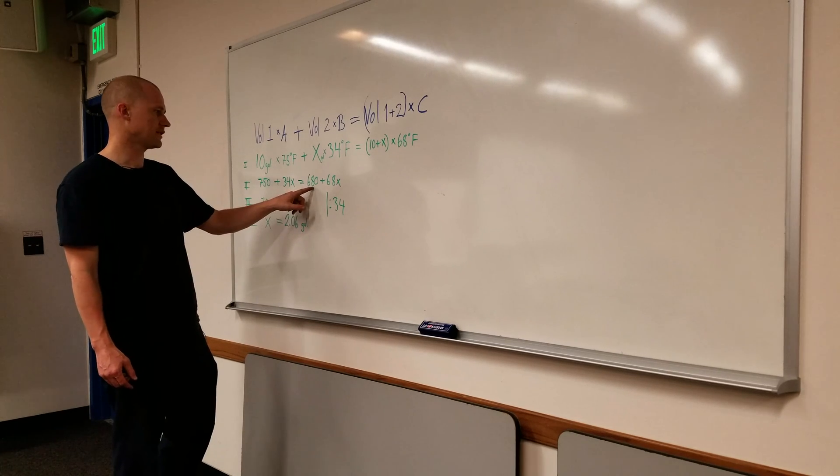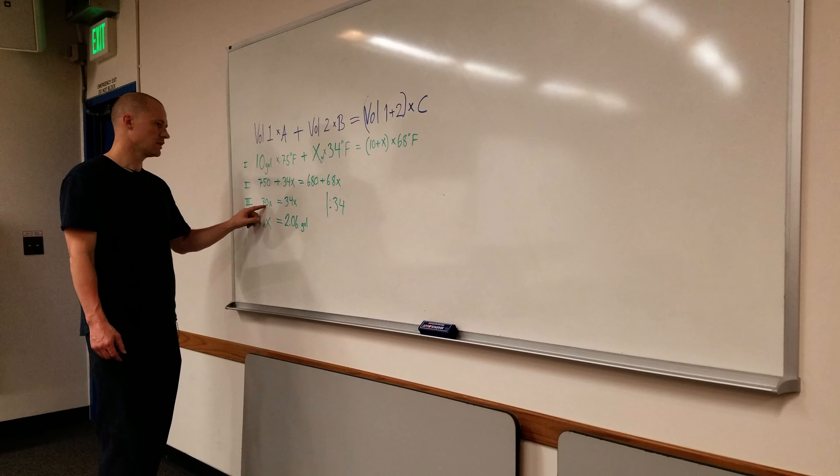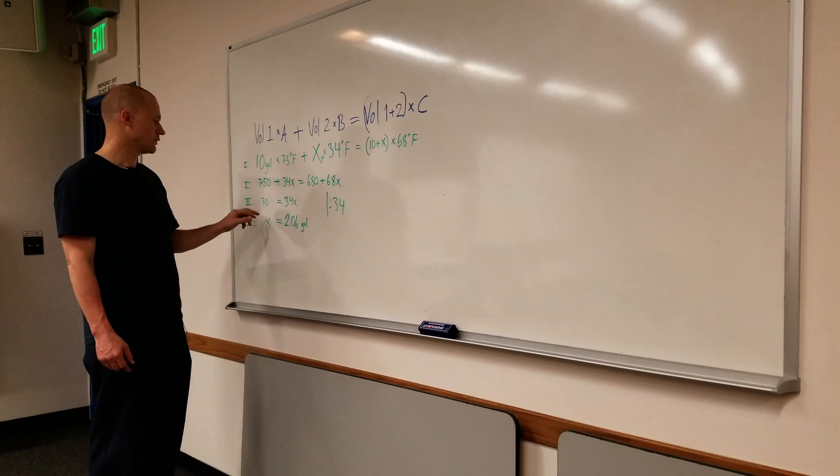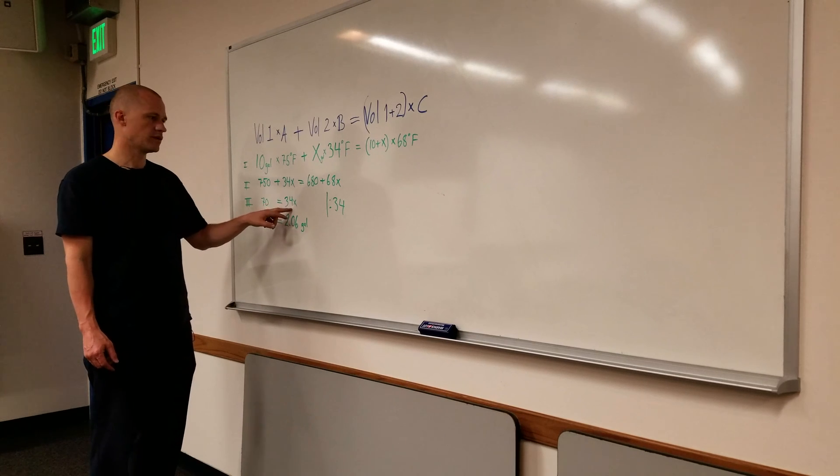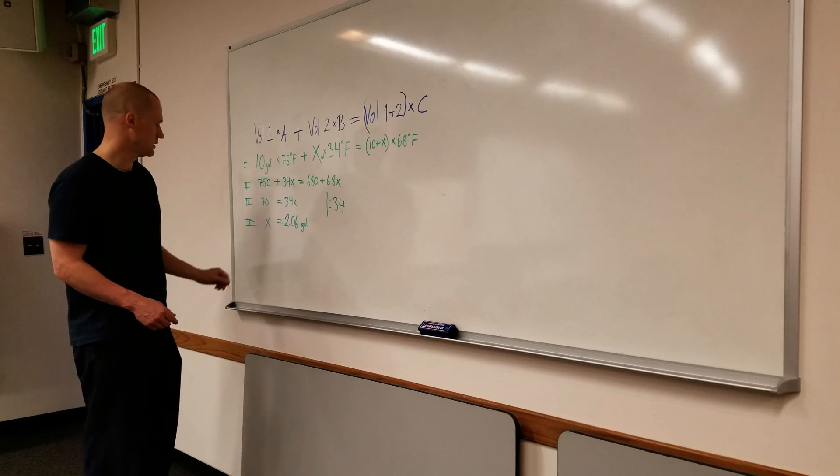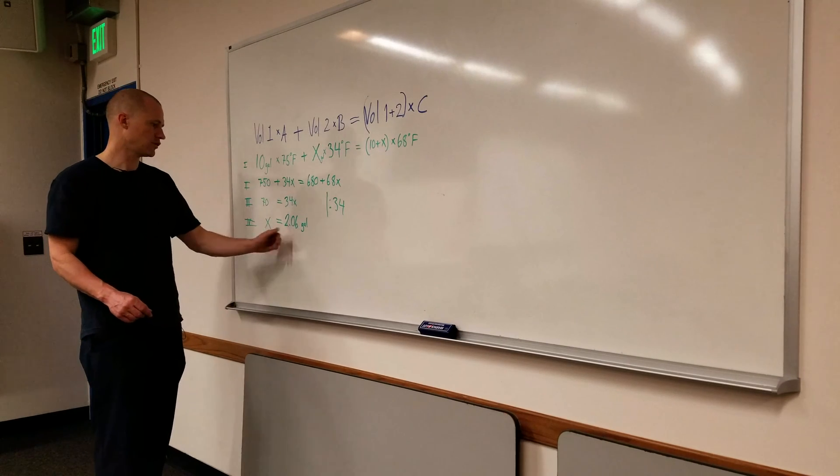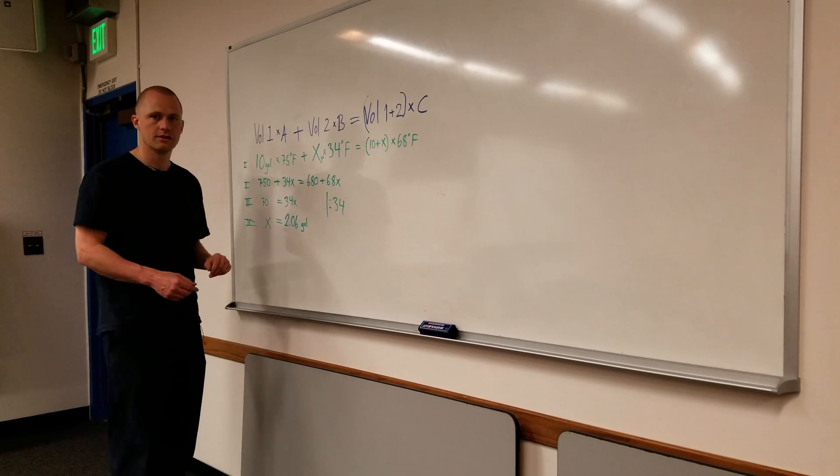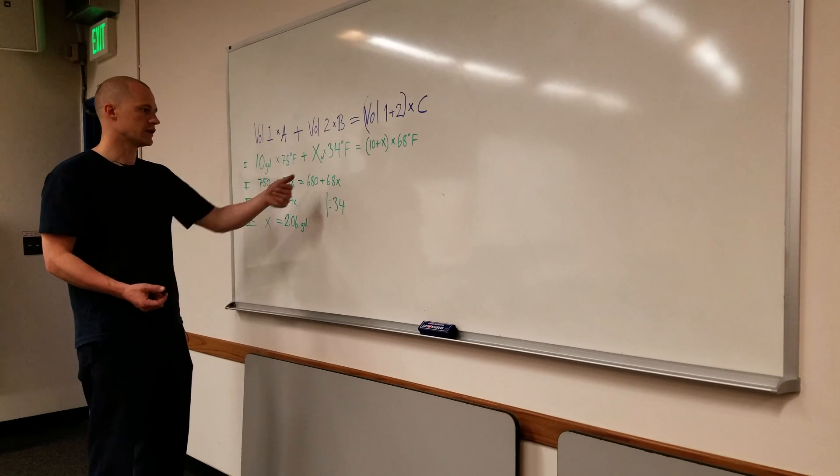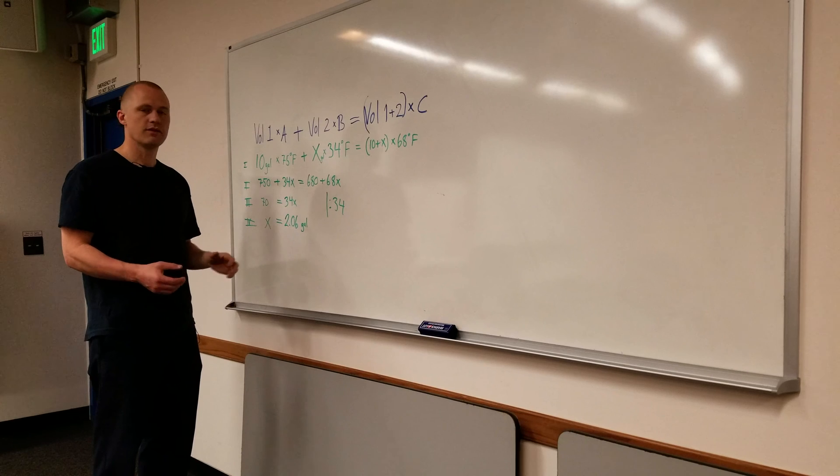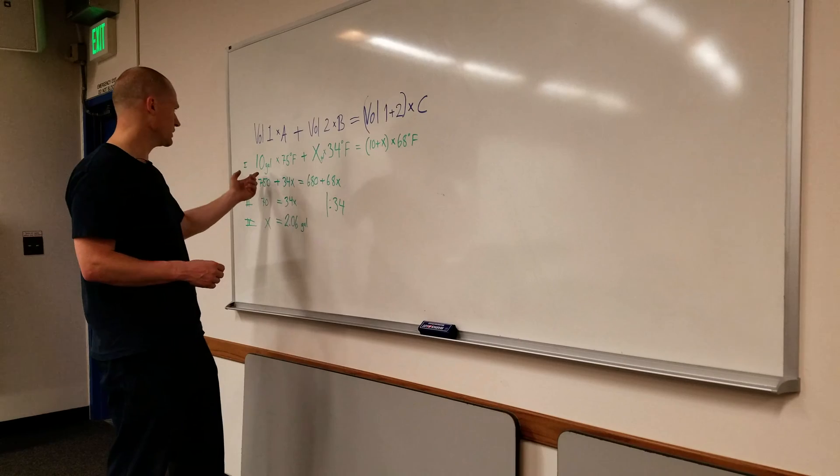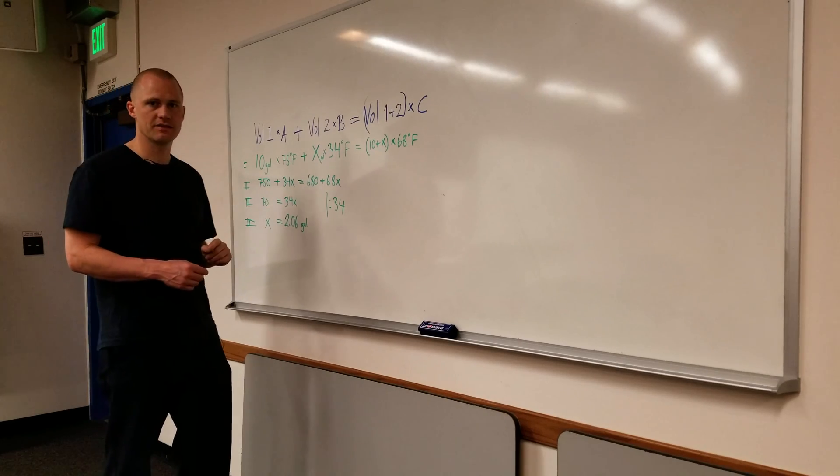So 70 equals 34x, then you divide everything by 34 to find out what 1x is, and you end up with x equals 2.06 gallons. So in this example you need to add about 2 gallons of water with a temperature of 34 if you wanted to crash it down to 68 degrees Fahrenheit, and you started with 10 gallons at 75 degrees.